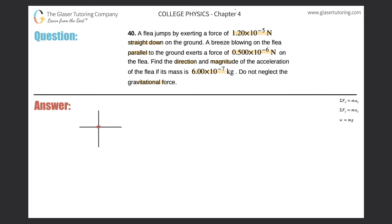The flea exerts a force on the ground, but that's a force produced by the flea — it's not on the flea. According to Newton's third law, when the flea pushes down on the ground with 1.2×10⁻⁵ N, the ground pushes back up on the flea with the same magnitude but opposite direction. That's the force we're concerned with — the ground pushing up on the flea.